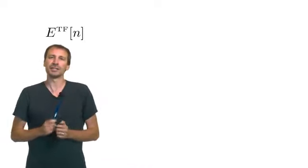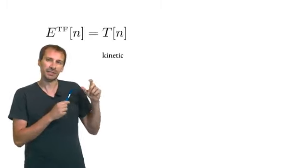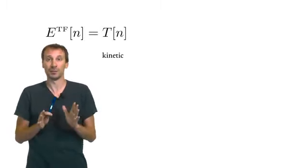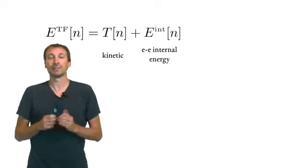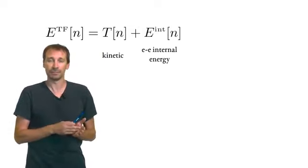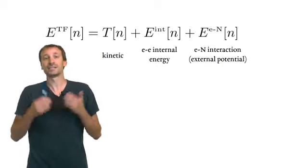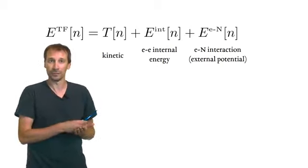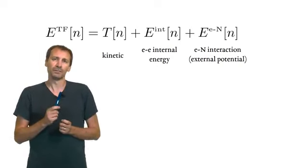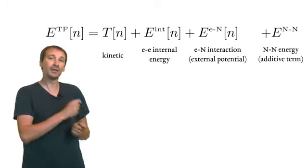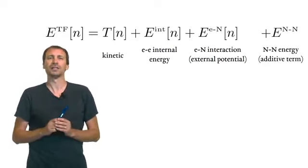The total energy functional will have some kinetic term to be statistically evaluated following Thomas' approach, an energy term due to the electron-electron interaction, sometimes called internal energy, as opposed to the electron-nuclei interaction, which is related to an external potential, for example the one of the nuclei, with their fixed position in space. Actually, an important role, at least quantitatively, is played by the nuclei-nuclei interaction, but this is only an additive term. It doesn't depend on the electron density.